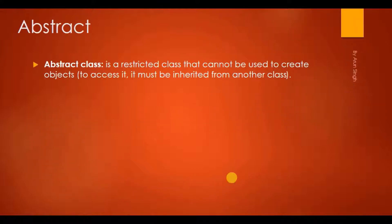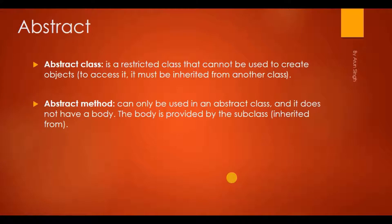An abstract class is a restricted class that cannot be used to create objects. To access it, it must be inherited from another class. You cannot create an object of an abstract class. An abstract method can only be used in an abstract class and it does not have a body. The body is provided by the subclass — that is, the class which will inherit this class.